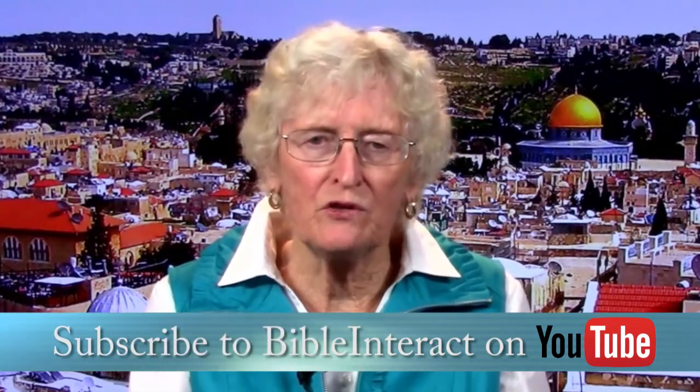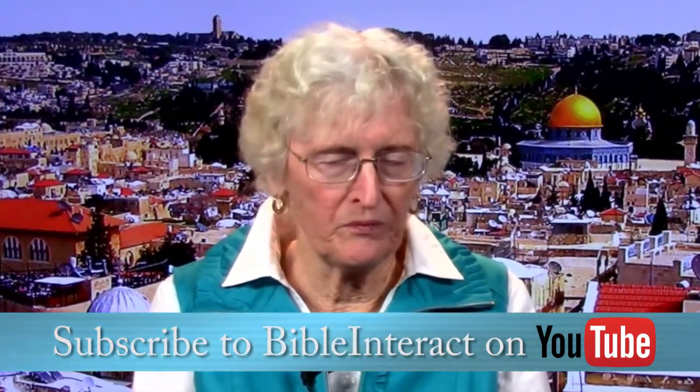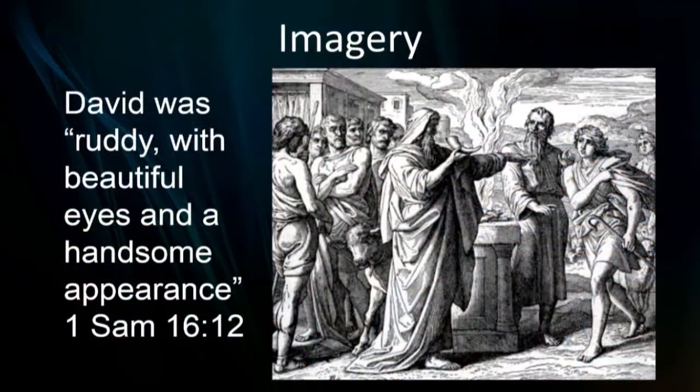So let's start with the concept of imagery. I'm going to take you into a passage that is going to evoke that visual image. This is the prophet Samuel, who is identifying David as the one who's going to be the next king. What we have is a description of David — he's a young man, probably a teenager. And we read that David was ruddy with beautiful eyes and a handsome appearance.